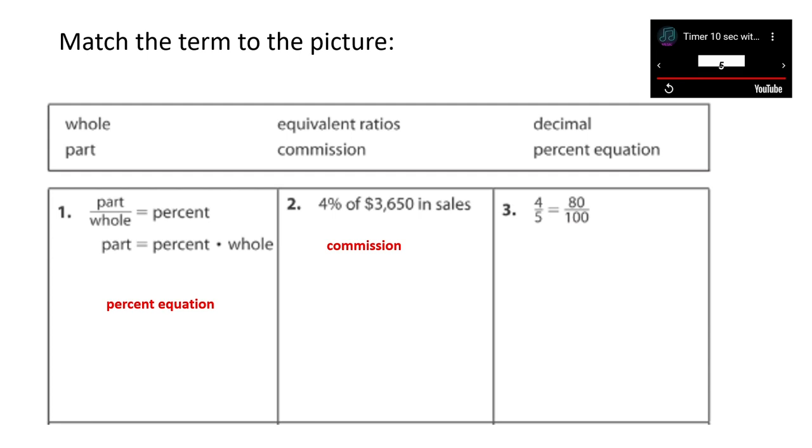And number three, 4 over 5 equals 80 over 100 represents equivalent ratios. Remember, you can multiply a ratio by one or by any value over the same value or you can divide it by a value over the same value to get an equivalent ratio. So, for example, 4 over 5 times 20 over 20, which is the same as saying 4 over 5 times 1, would give you 80 over 100. You could also say that 80 over 100 divided by 20 over 20, which is the same as saying divided by 1, would give you 4 over 5.